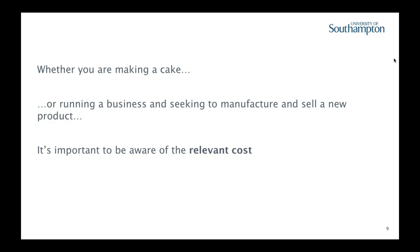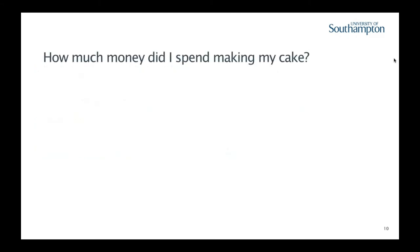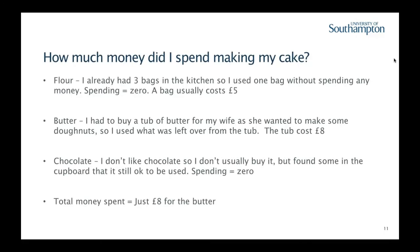We're going to look at costs through the example of my cake. I only used three ingredients: flour, butter, and chocolate. Starting with flour — I already had three bags in my kitchen, so I used one without needing to spend any money. Normally those bags cost £5, but my spending here was zero.